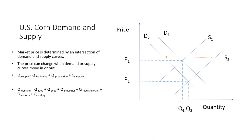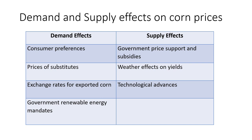Demand for corn comes from its use in food, seed, industrial processes, feeding livestock, exports, and ending stocks. U.S. domestic corn use grew 2.5 percent on average during 1980-2021. The table summarizes the main demand and supply effects on corn prices. On the demand side: consumer preferences, prices of substitutes, exchange rates for exported corn, and government renewable energy mandates. On the supply side: government price support and subsidies, weather effects on yields, and technological advances.